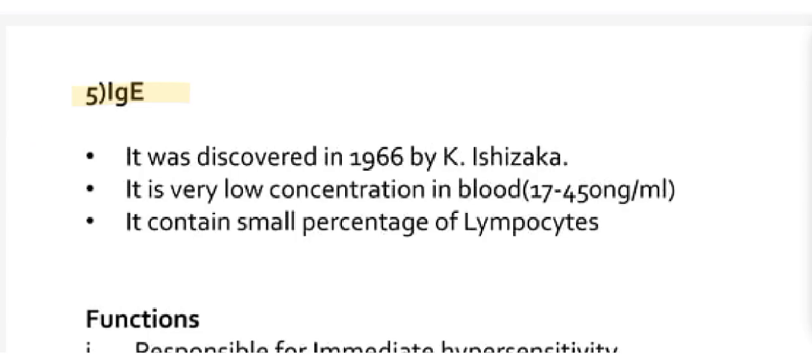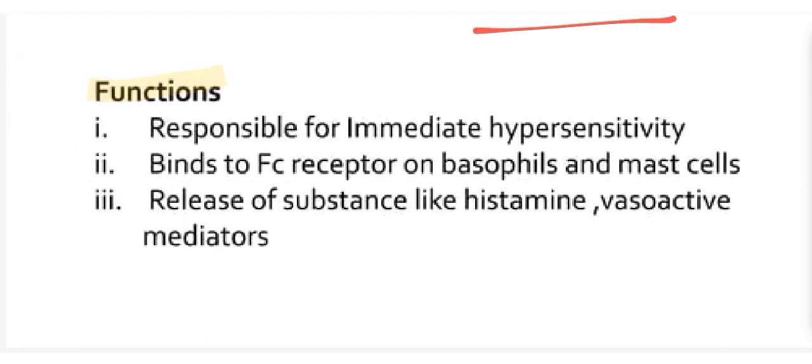Our last point is IgE. It was discovered in 1966 by K. Ishizaka. It is very low concentration in blood. It contains small percentage of lymphocytes.